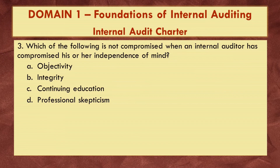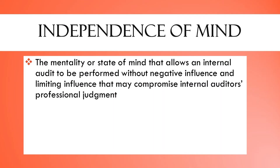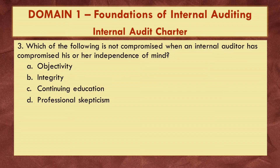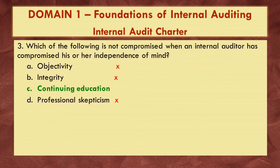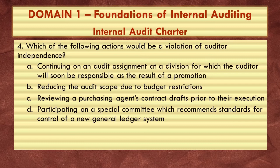Number three: which of the following is NOT compromised when an internal auditor has compromised his or her independence of mind? A. Objectivity. B. Integrity. C. Continuing education. D. Professional skepticism. When independence of mind is compromised, auditors cannot perform audits objectively, with integrity, or display a healthy level of professional skepticism. The answer is C, Continuing education, because continuing education or training is not compromised when independence of mind is compromised, while the others are.